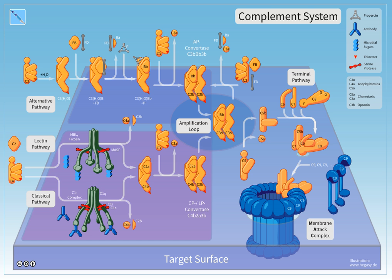When stimulated by one of several triggers, proteases in the system cleave specific proteins to release cytokines and initiate an amplifying cascade of further cleavages. The end result of this complement activation or complement fixation cascade is stimulation of phagocytes to clear foreign and damaged material, inflammation to attract additional phagocytes, and activation of the cell-killing membrane attack complex.